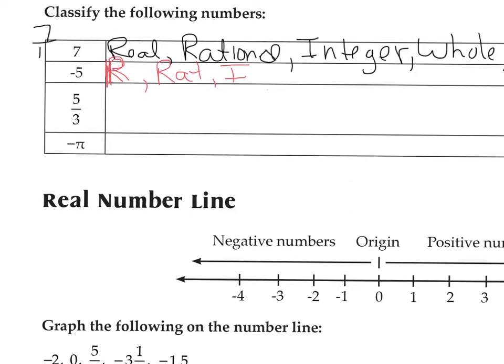Let's talk about five thirds. Five thirds is a real number. It's a rational number — obviously it can be written as a fraction because it already is one. Is it an integer? The integers are the negative and positive numbers used for tick marks on a number line. Five thirds is not an integer. So we're not going to classify it as an integer. If it's not an integer, it can't be a whole number, and therefore it can't be a natural number. Five thirds is classified as real and rational only.